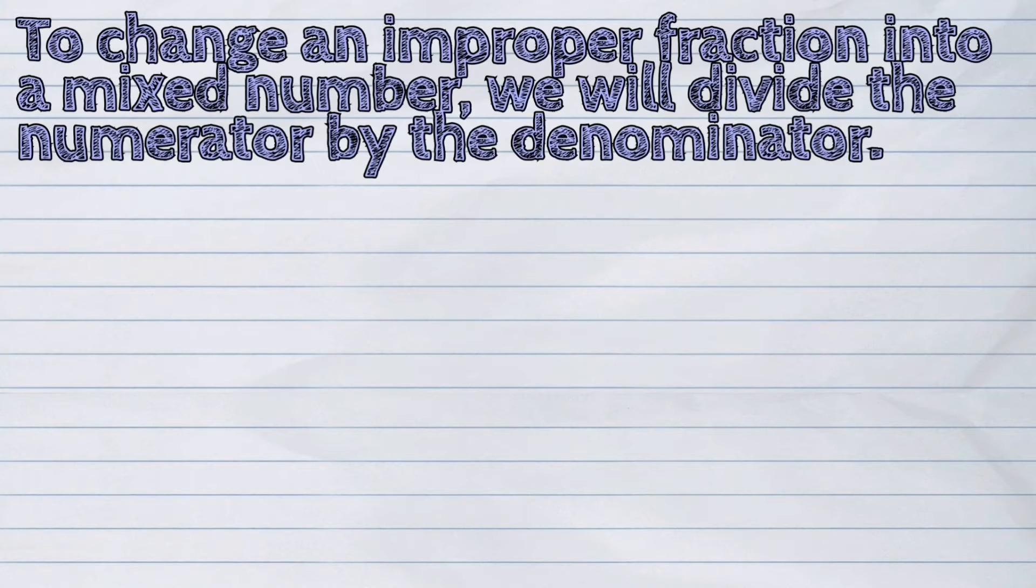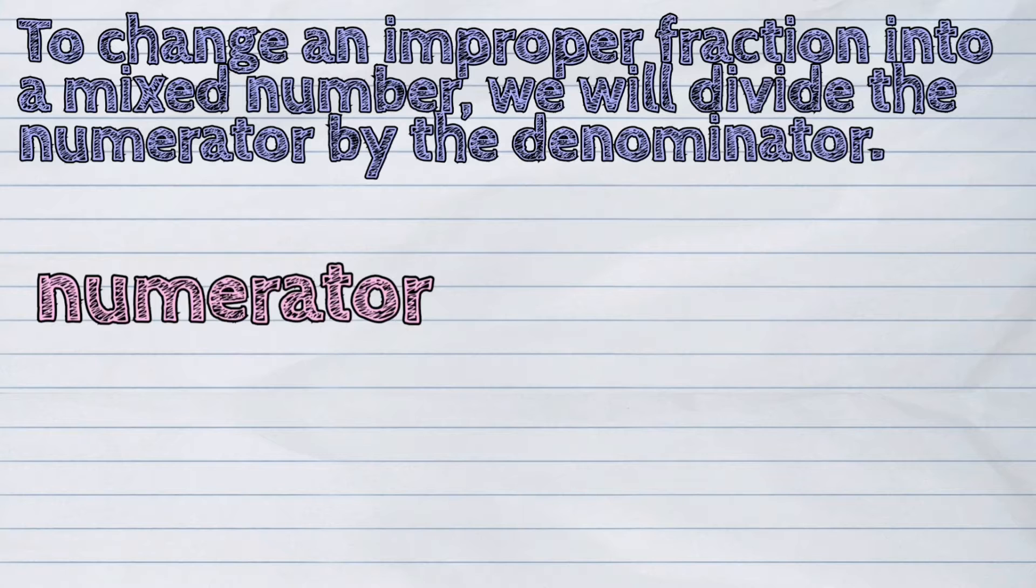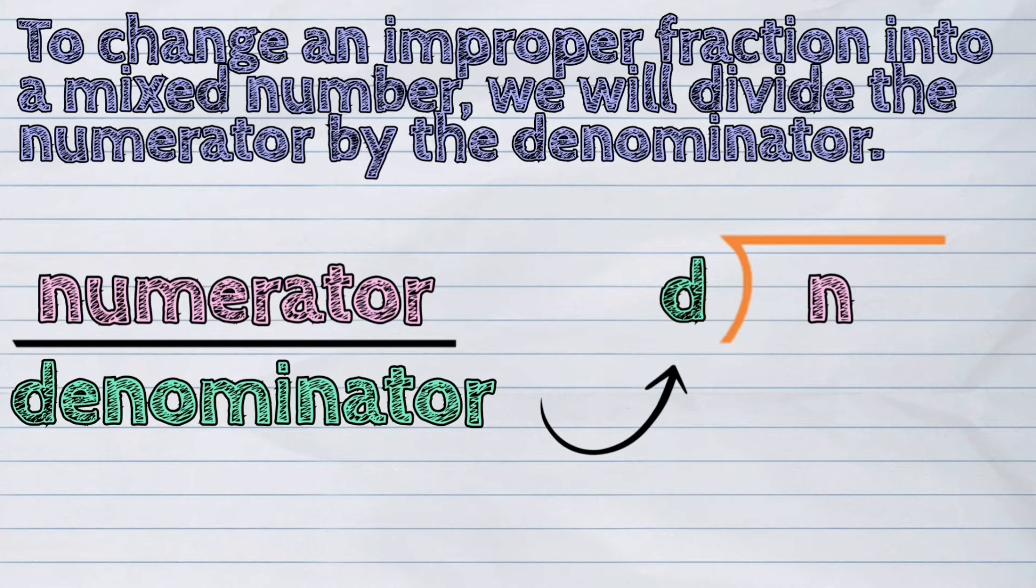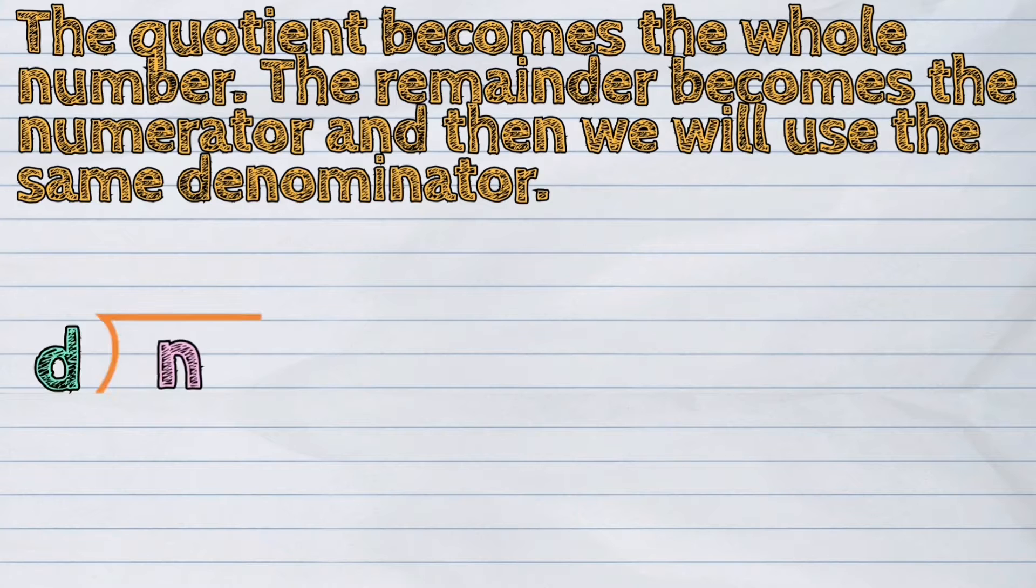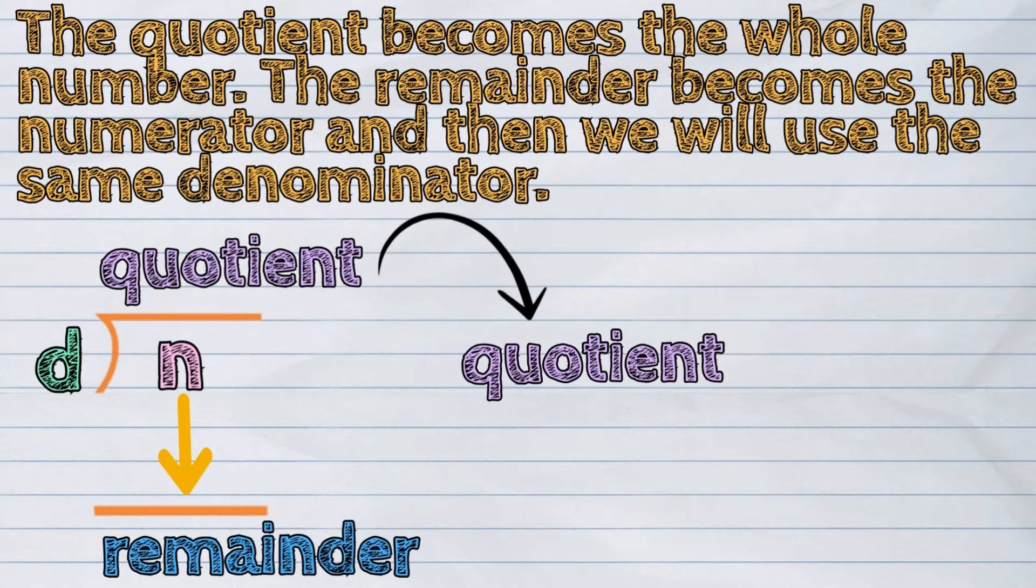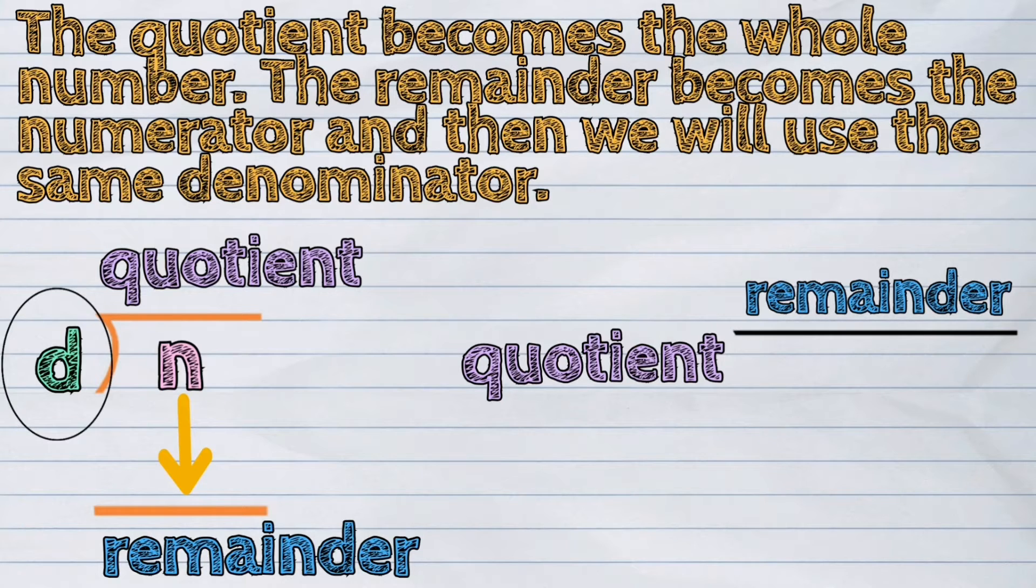To change an improper fraction into a mixed number, we will divide the numerator by the denominator. The quotient becomes the whole number. The remainder becomes the numerator and then we will use the same denominator.